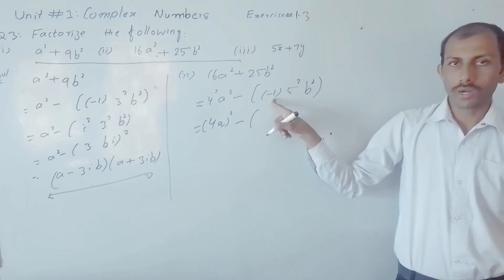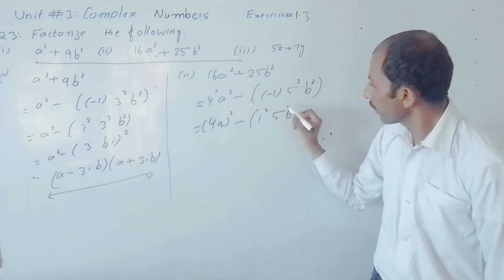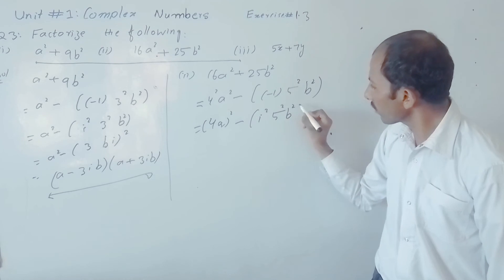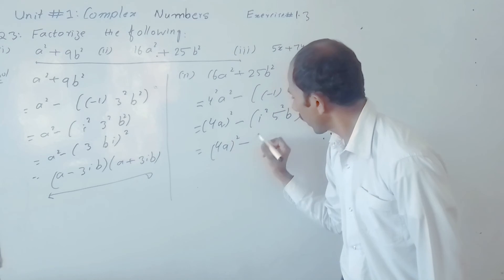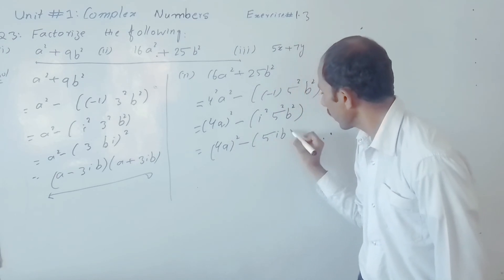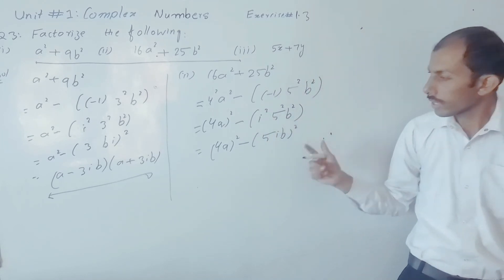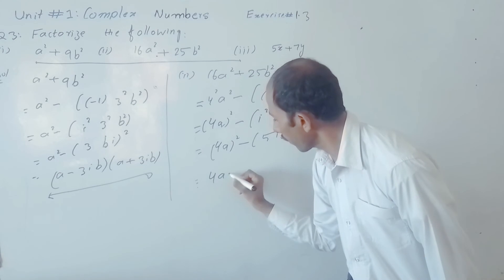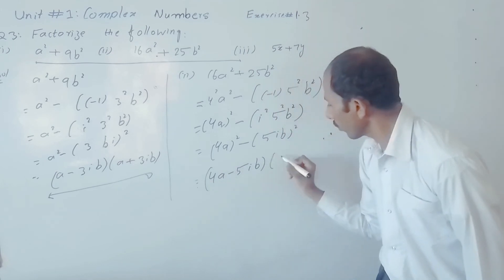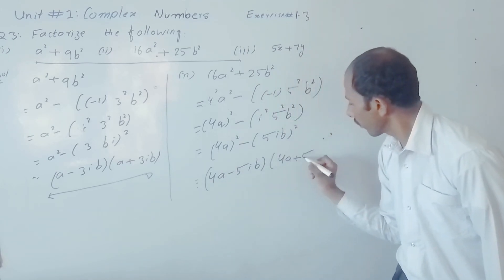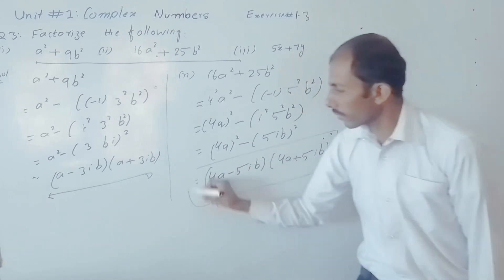Since iota² equals −1, so we write iota², then 5b, giving 5²b². So (4a)² − (5·iota·b)² whole square can also be written in whole square form, which is equal to (4a − 5·iota·b) into (4a + 5·iota·b), which is the required solution.